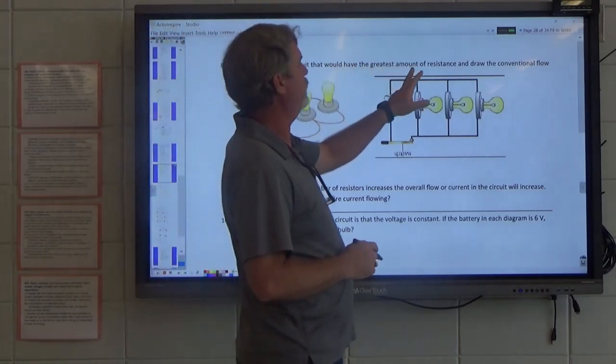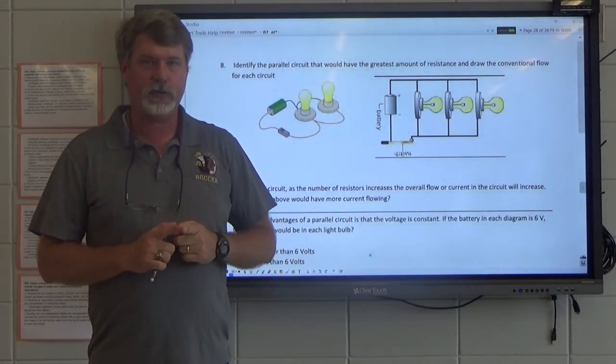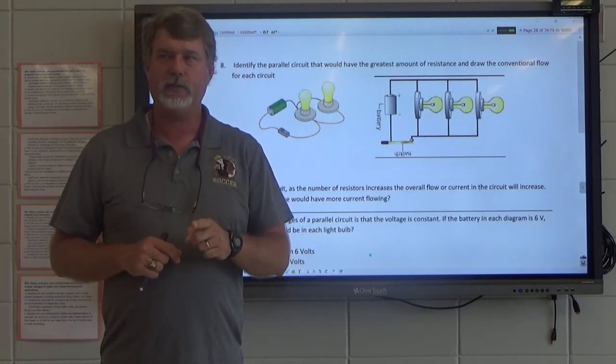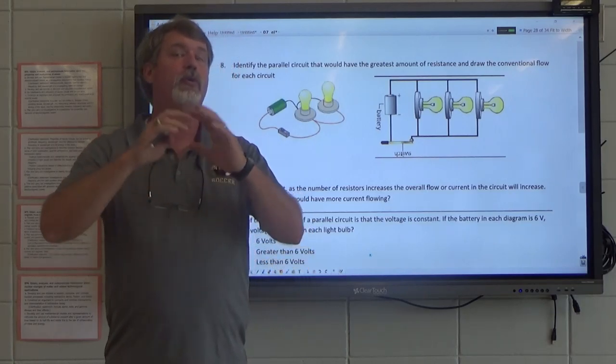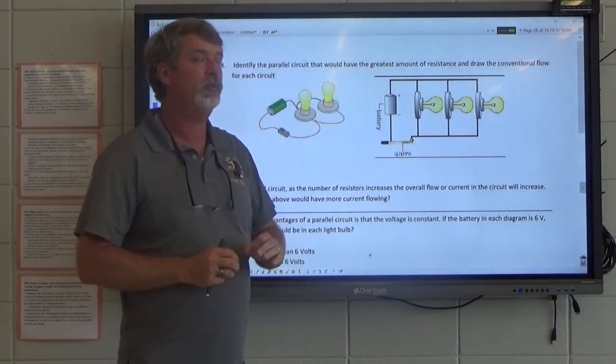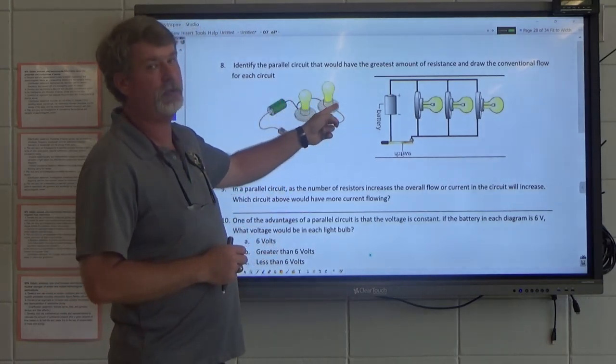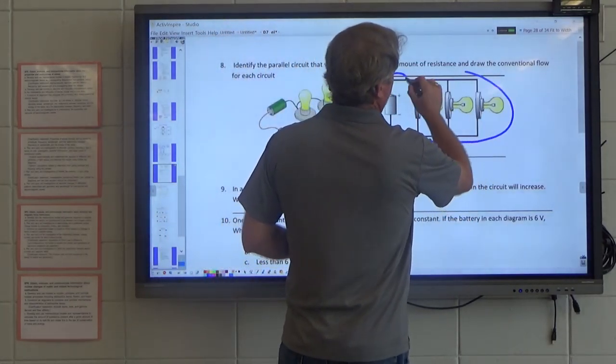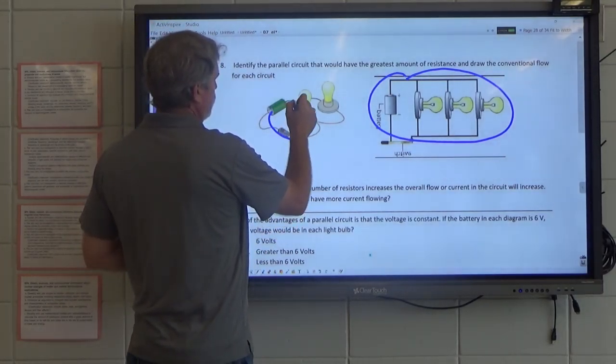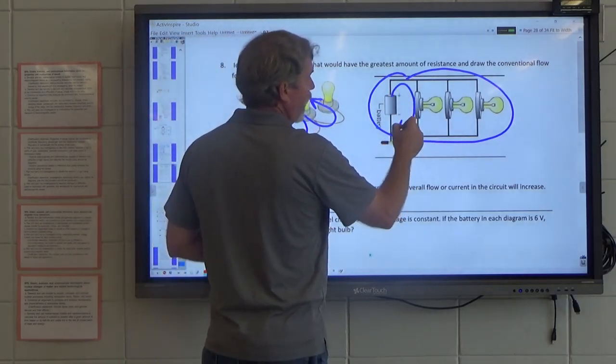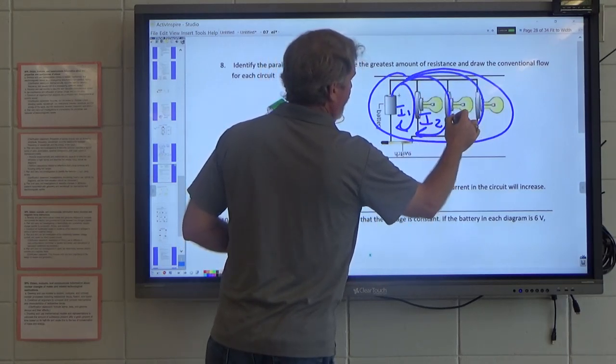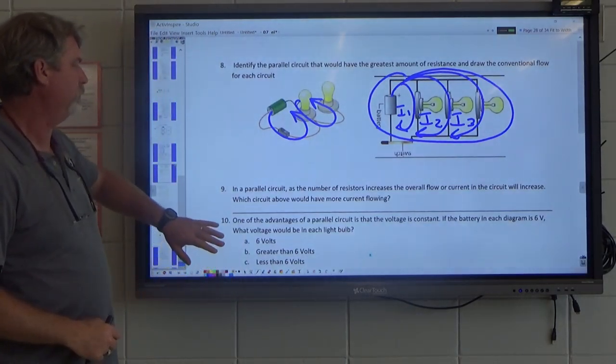Identify the parallel circuit that would have the greatest amount of resistance. Now a parallel circuit, remember parallel circuits like your home, and it's dangerous to plug in too many things into one outlet. So that tells me that the more resistors I add, the resistance on the total system must be going down. So identify the parallel that would have the greatest amount of resistance. That's the one with the most things plugged into it. So this one has two resistors. This one has three. Draw the conventional flow. Conventional flow from positive to negative. There's I1, I2, I3. More than one path.